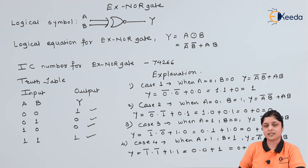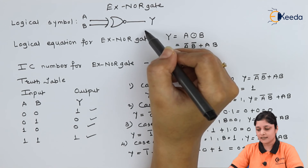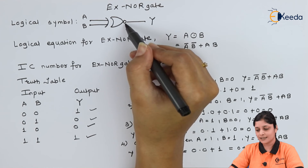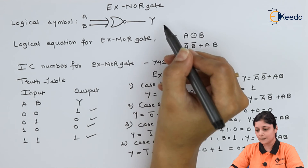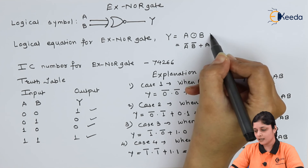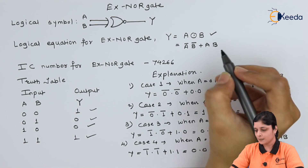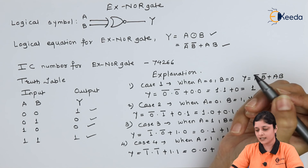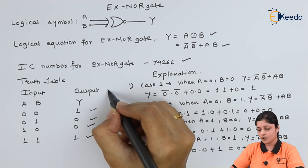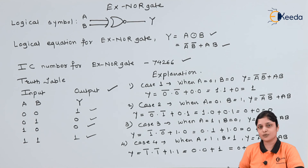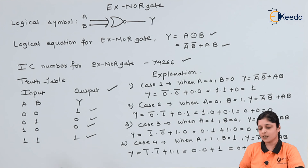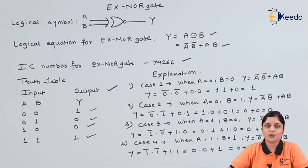So the XNOR gate has a logical symbol where A and B are inputs, with a bubble indicating inversion, and the output is Y. We covered the expanded logical equation, the IC number, the truth table with all four input combinations, and the case-by-case explanation to get the output Y. This is all about the XNOR gate. Thank you for watching — stay tuned with Ikida and subscribe to Ikida.